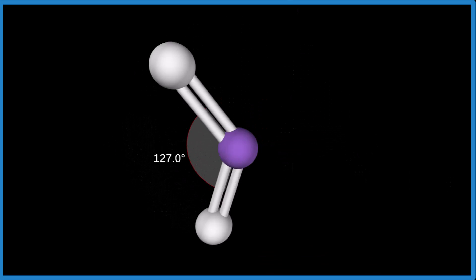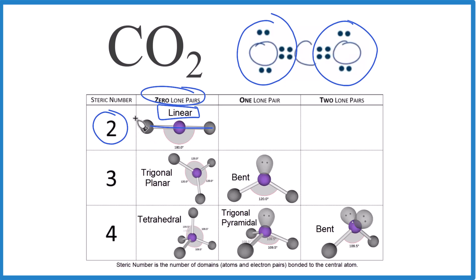Let's go back. So because we have a steric number of two and no lone pairs, it's linear. There is another way to figure this out.